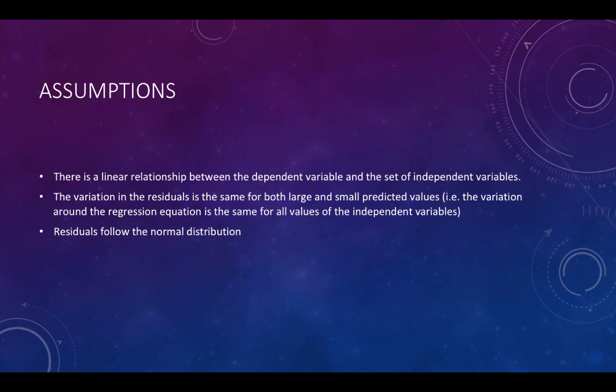The residuals — the distance between the observation and the regression line — follow a normal distribution. Importantly, the independent variables are not correlated with each other. If they are correlated, you get something called multicollinearity, which is bad in a multiple regression equation. Finally, the residuals are independent of one another.